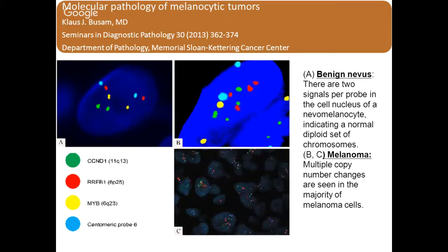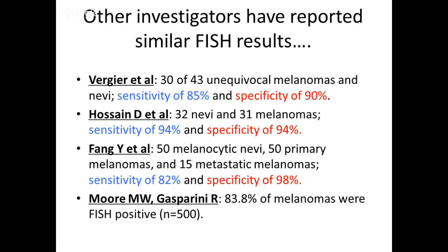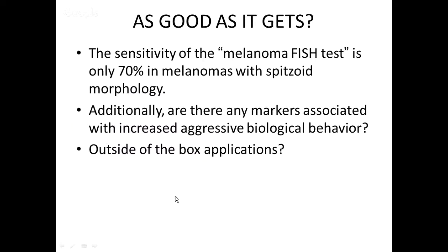A normal cell shows two copies of each color, whereas a melanoma shows multiple gains in RREB1 (6P) and gains in CCND1 (11Q). Other investigators reported similar FISH results when replicating this data: 85% sensitive, 90% specific; 94% sensitive, 94% specific; 82% sensitive and 98% specific. One paper looked at 500 melanomas only and found that 83.8% of melanomas were FISH positive.